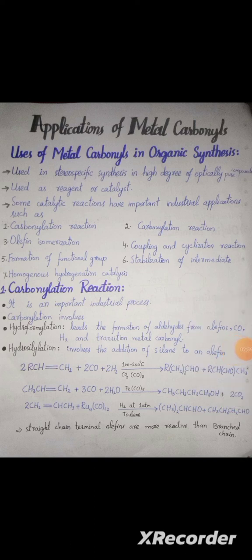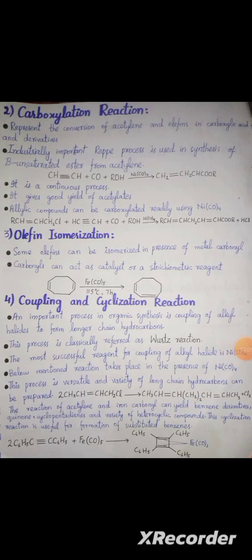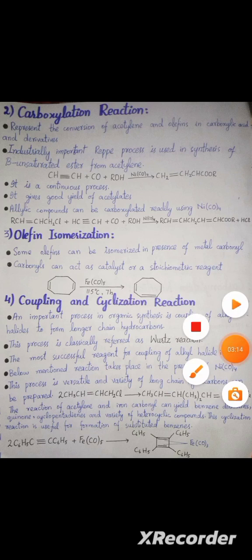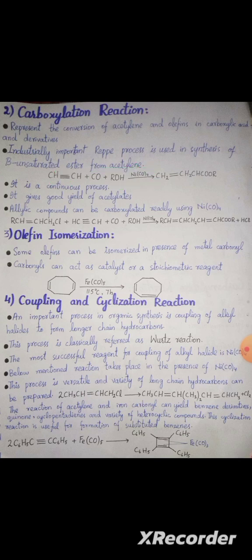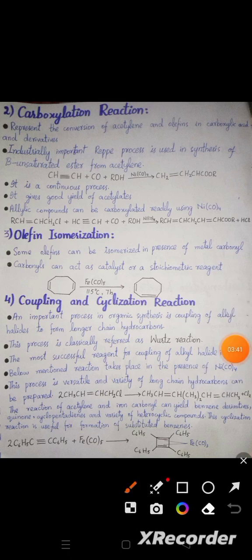Carboxylation reaction represents the conversion of acetylene and olefins into carboxylic acid derivatives. An industrially important process is the synthesis of beta-unsaturated esters from acetylene. Ethyne, carbon monoxide, and alcohol react in the presence of a catalyst to give CH₂=CHCOOR. This is a continuous process that gives good yield of acrylates.